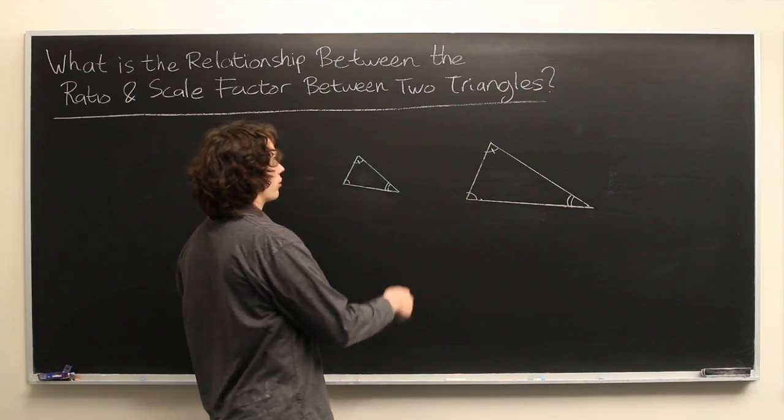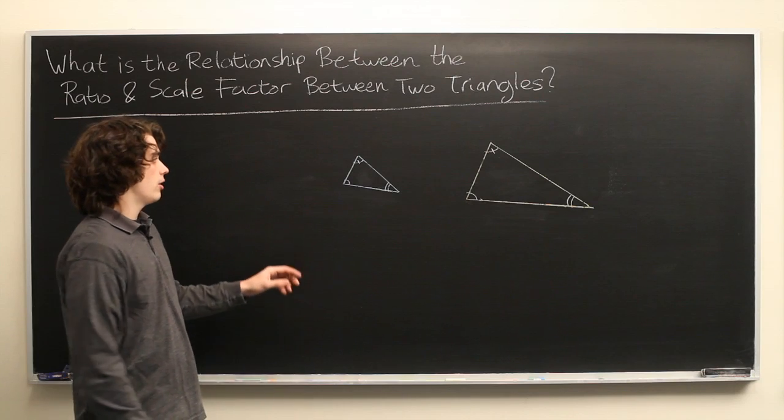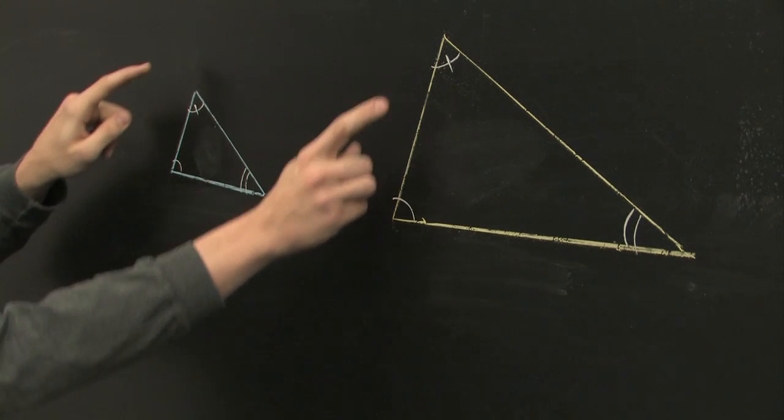What is the relationship between the ratio and scale factor between two triangles? So, here we have two triangles, blue and yellow, and we're told that they are similar, meaning their corresponding angles are congruent.